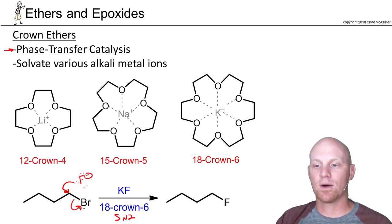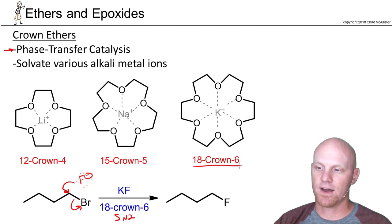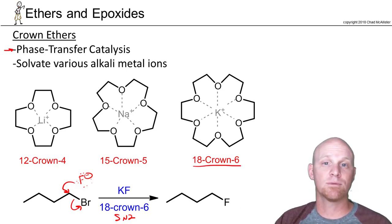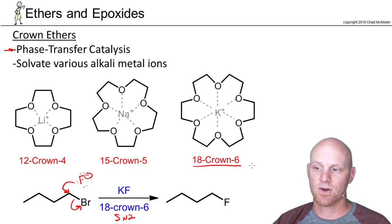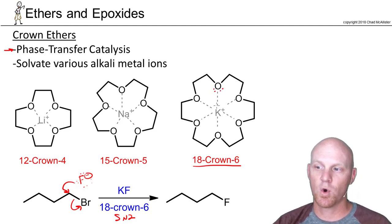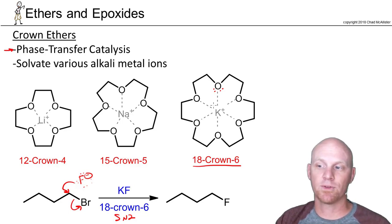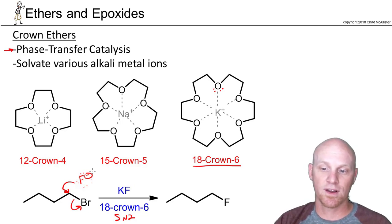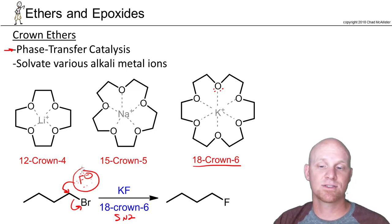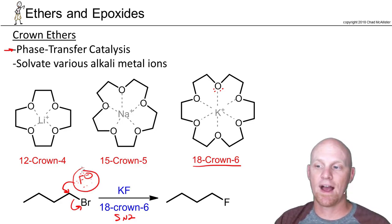But if I add 18-crown-6, this guy right here, it'll work. The idea is that 18-crown-6 makes potassium fluoride soluble. Each of these oxygens with their lone pairs coordinates with the potassium, and the strong ion-dipole interactions that are formed make potassium fluoride much more likely to dissociate. As a result, we get naked fluoride ions in solution — a very strong nucleophile — and we can do this backside attack, this SN2 reaction.